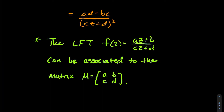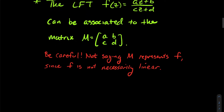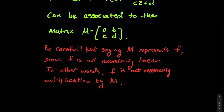The linear fractional transformation — LFT for short — can be associated to a matrix M, where you take the coefficients a, b, c, d and make a 2×2 matrix. But be careful: I'm not saying that M represents this LFT in the same way a matrix represents a linear transformation in linear algebra. F is not necessarily just multiplication by this matrix. All we're saying is that matrix is associated to this particular LFT.